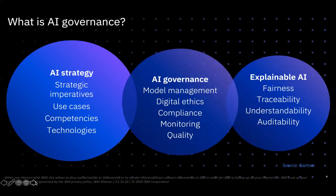So what is AI governance? If you believe AI strategy is strategic imperatives, use cases, competencies, and technologies, let's start with that as a foundation. By definition, AI is hardcore computer science — it's not magic, it's not science fiction. AI governance is then model management, digital ethics, compliance, monitoring, ensuring quality across all of those models. And then you also have explainable AI — if I'm leveraging an AI model to help understand whether or not I'm approved for a loan and I was denied that loan, it helps me understand why and explains it in a fair and equitable way so that if that decision were traced back, those things would hold true.